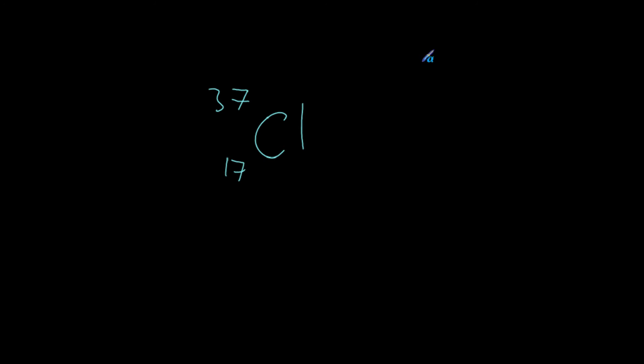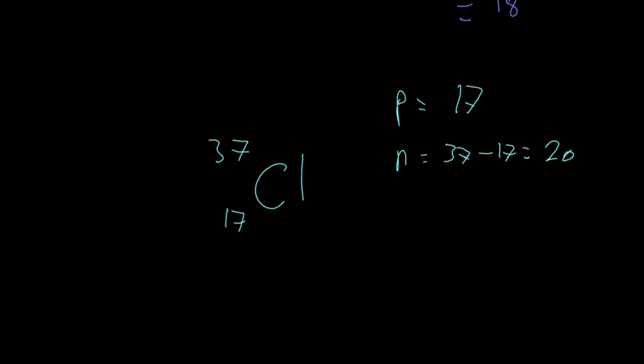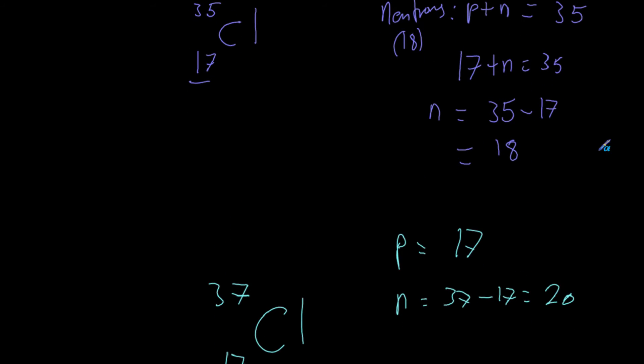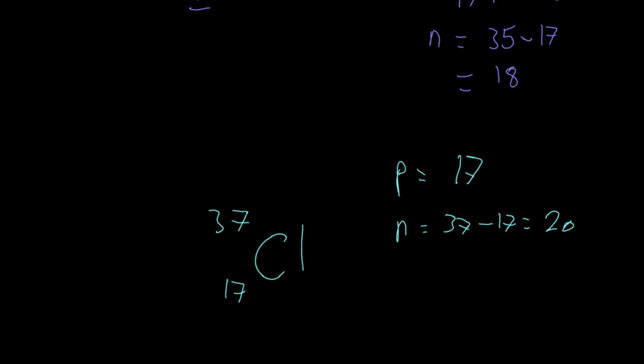And so if you work out quickly the number of protons and neutrons, protons again is 17, neutrons is equal to our mass number, take away our number of protons, which is 20. And if we have a look up here, here we have a chlorine atom with 18 neutrons, and here we have a chlorine atom with 20 neutrons. So what's happening here?